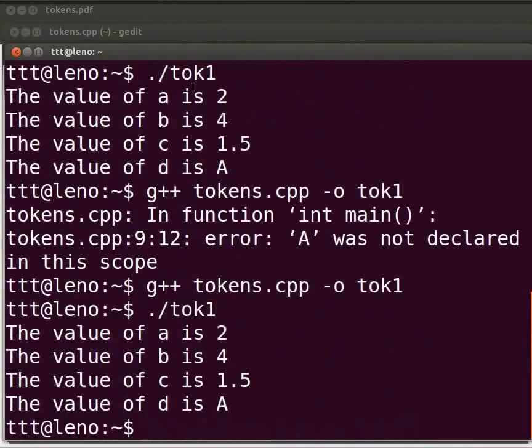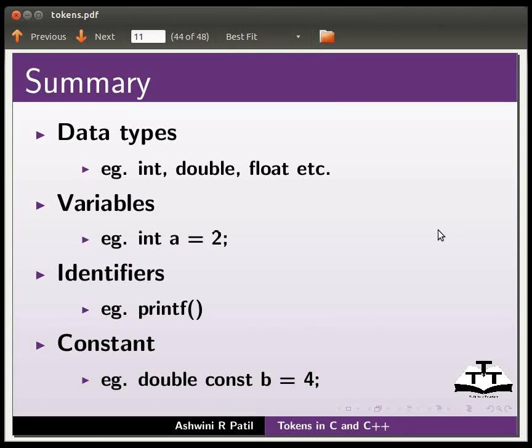Now switch back to our slides. Let us summarize. In this tutorial we learnt data types, examples: int, double, float, etc. Variables, example: int a = 2. Identifiers, example: printf. And constants, example: double const b = 4.